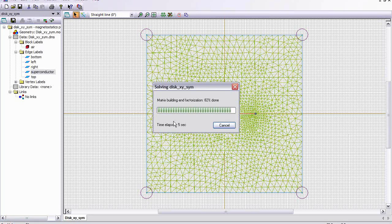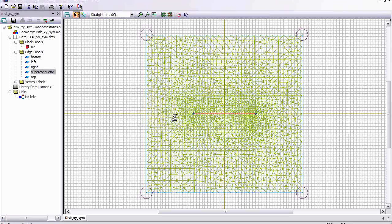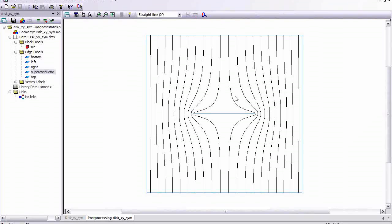It's already been solved once, but we'll go ahead and refresh it here. So the problem's been solved, and we are looking at the flux lines as they're deviated by the superconducting boundary here.